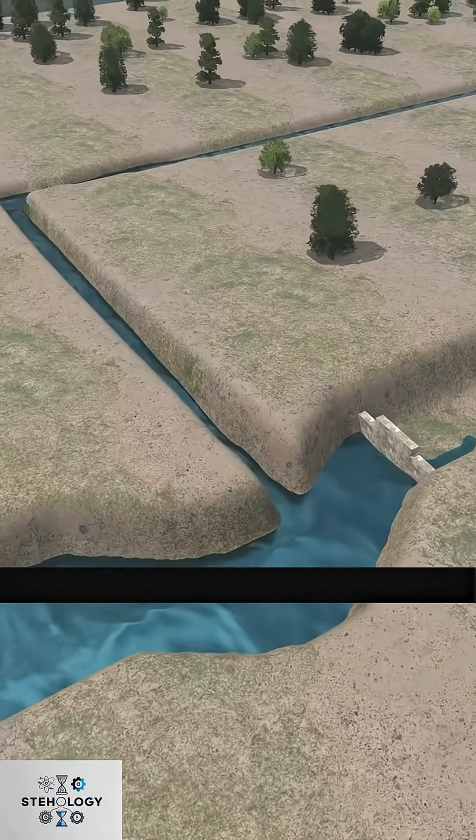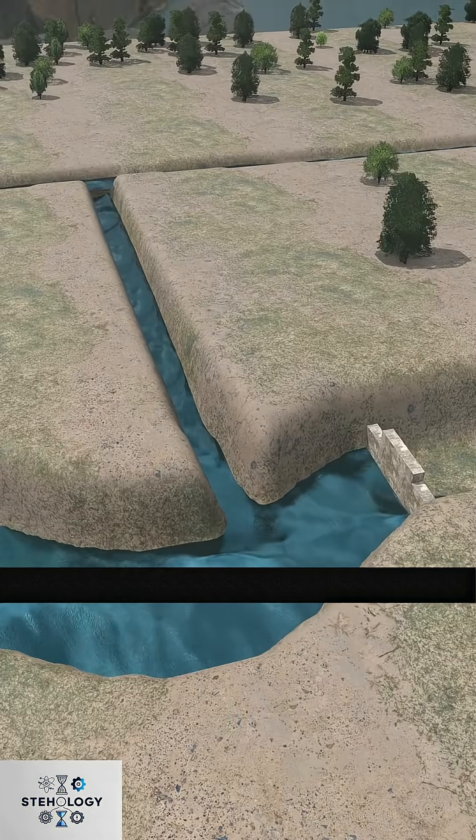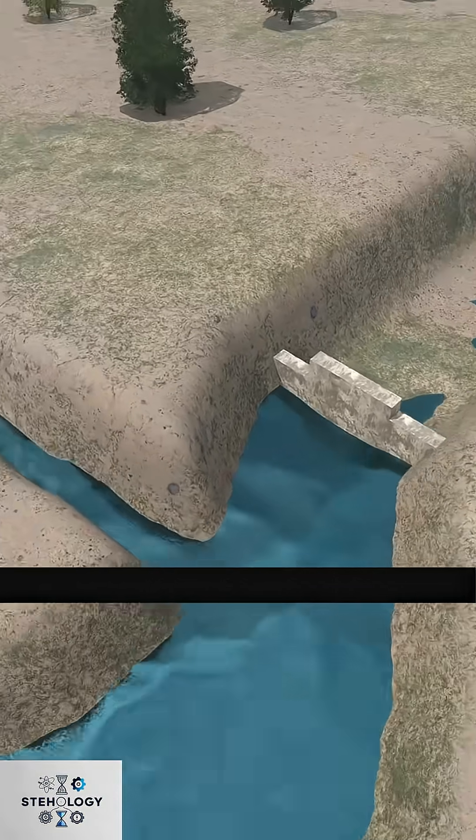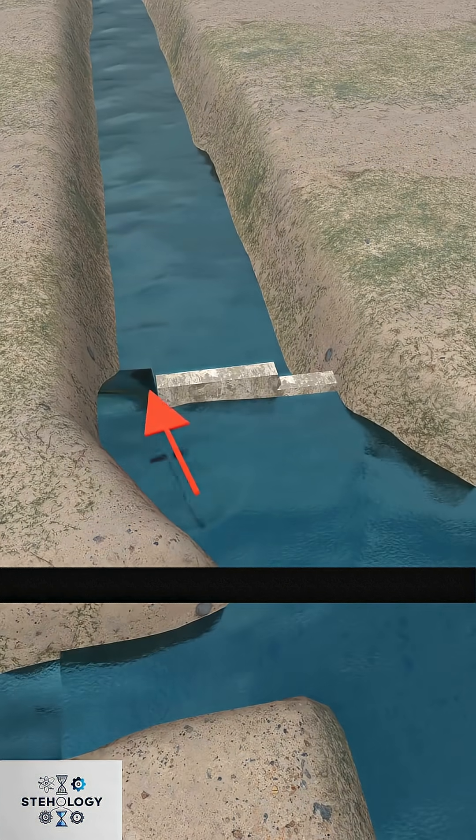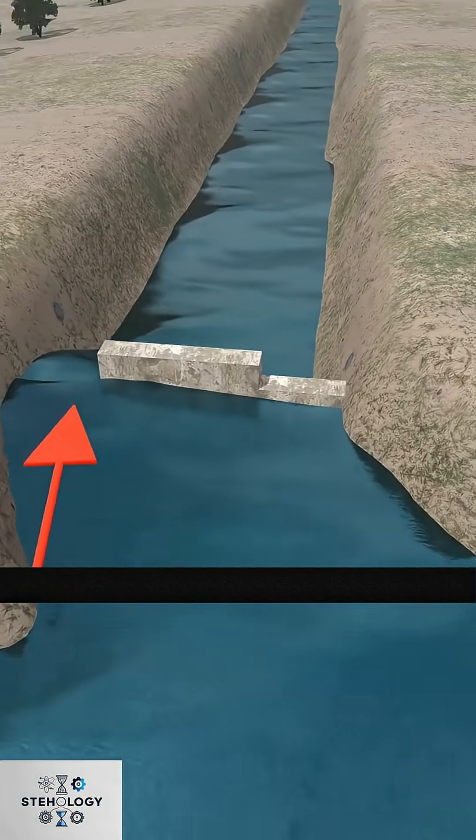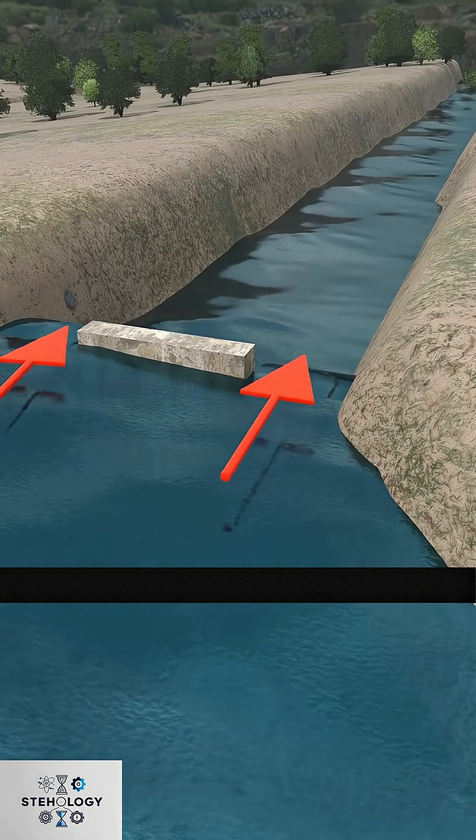During rainy seasons, as water rises, it first flows back into the river from the lowest opening to relieve floods. As water rises, it exits the second opening. If it keeps rising, it submerges the entire dam, ensuring full flood relief.